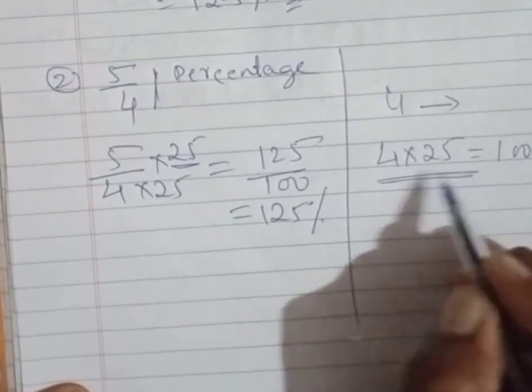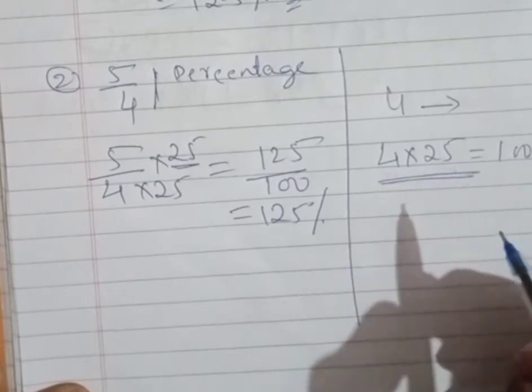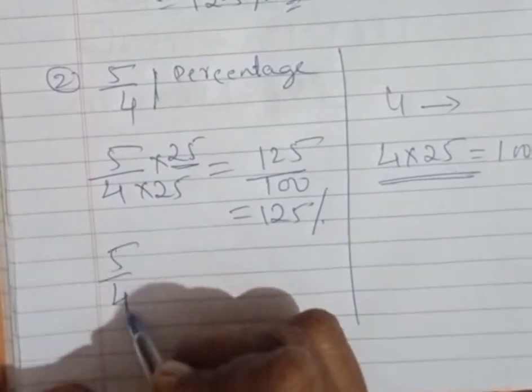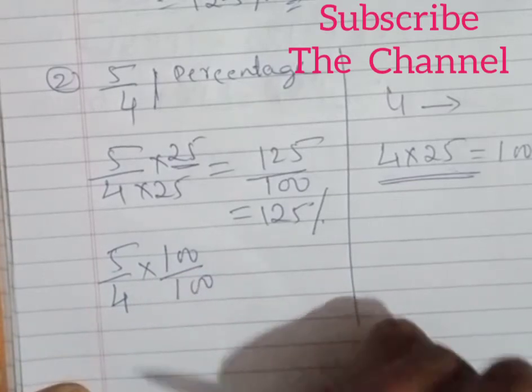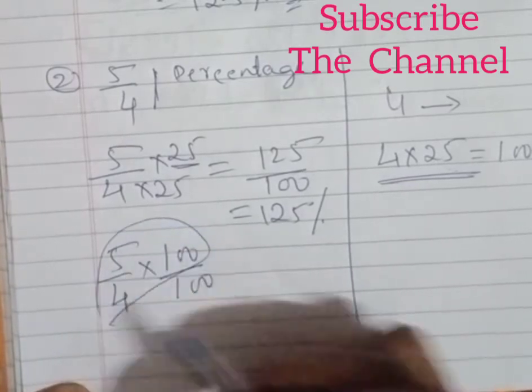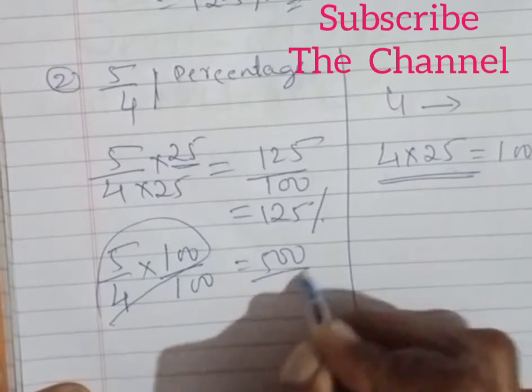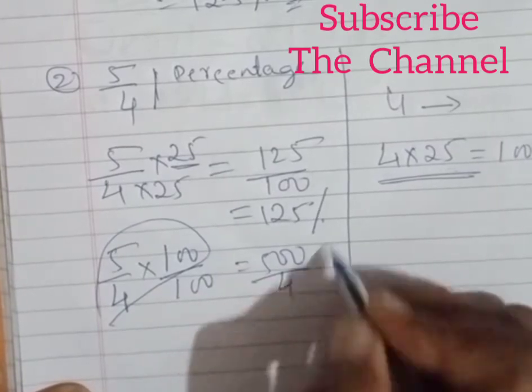So if you don't want to do this one, if you're not perfect with these multiples and all those things, as usual you're going to do this way: 5 upon 4, that is the fraction, into 100 upon 100. So what happens here, you're going to take this together, that is equal to 500 upon 4, percentage you are writing.